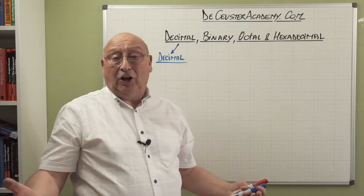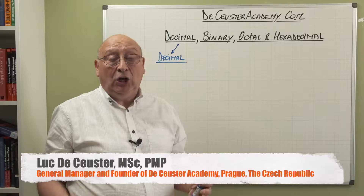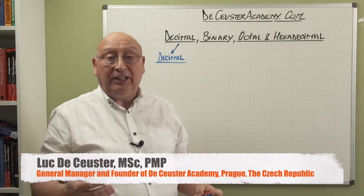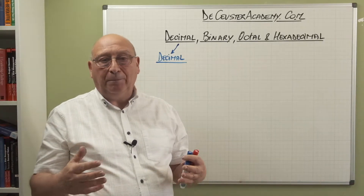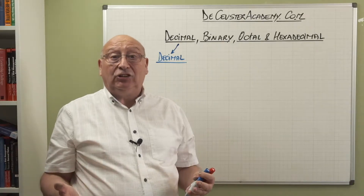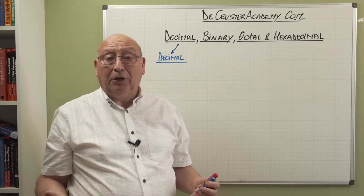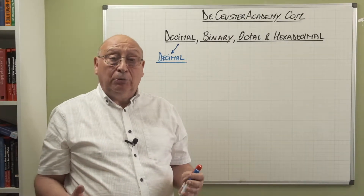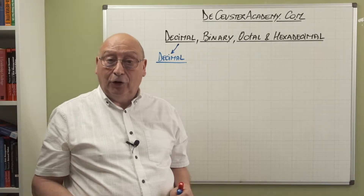Welcome back to the Koster Academy. We're still talking about number theory and divisibility, but now we are going to look into something different: different ways to write numbers. We all know the decimal notation, but in computer science we use binary, but also octal and hexadecimal notations.